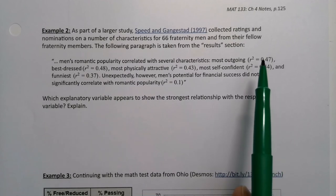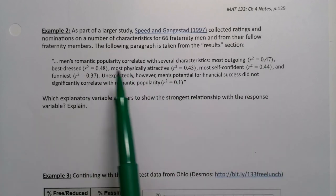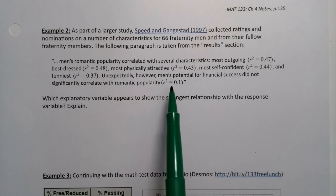You'll notice that these are moderate, moderate, moderate, moderate, moderate. They're all moderate relationships except for this one which is weak. So which one had the strongest one?